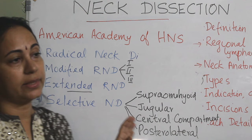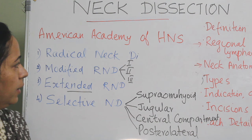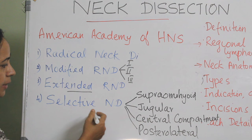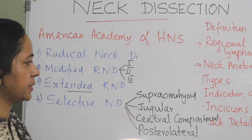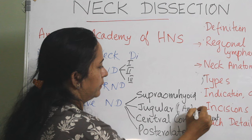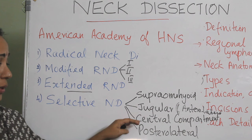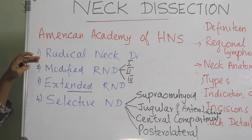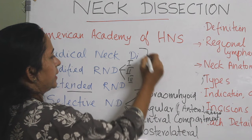In selective neck dissection, we preserve some of the lymphatic groups with reference to radical neck dissection. There are four types of selective neck dissection: supra-omohyoid neck dissection, jugular or anterolateral, central compartment neck dissection, anterolateral neck dissection, and posterolateral neck dissection. The radical, modified radical, and extended radical neck dissections are collectively called comprehensive neck dissection.